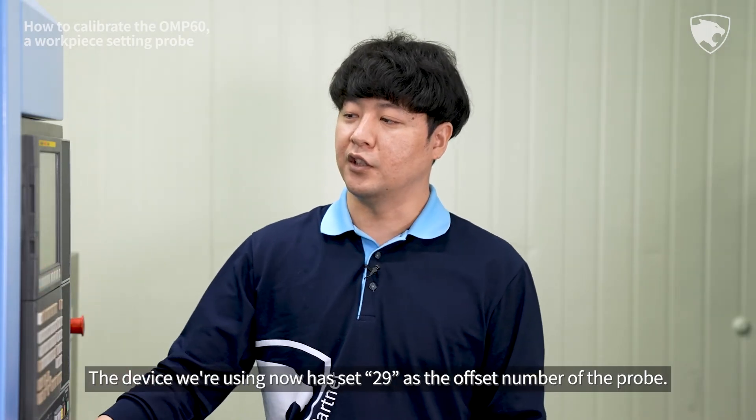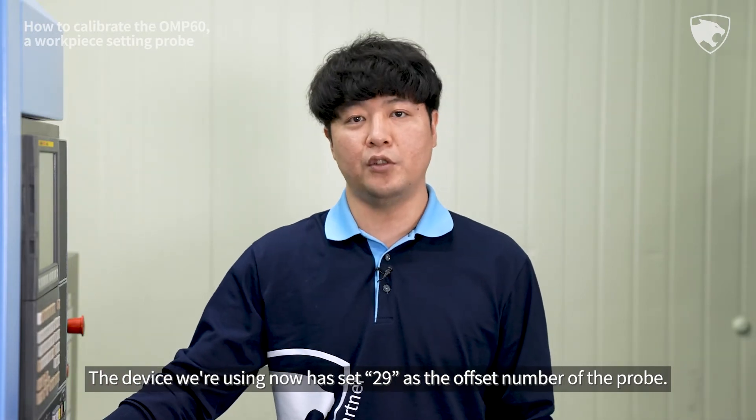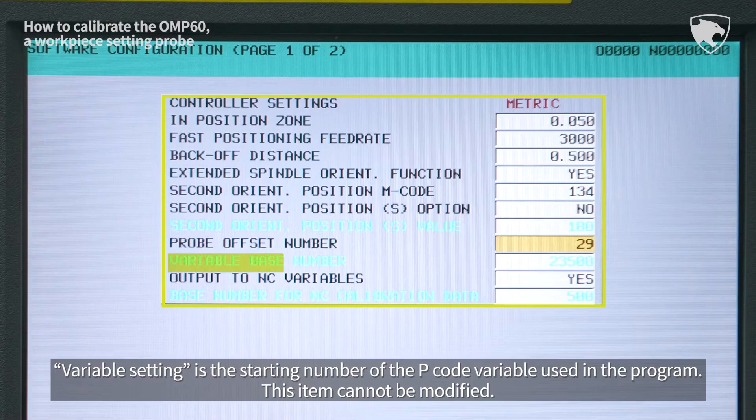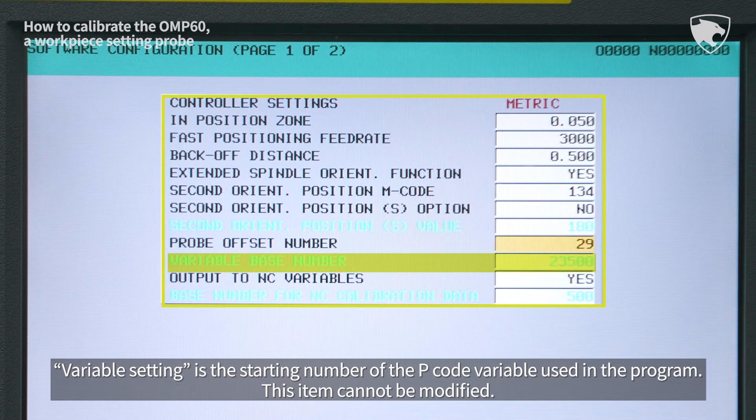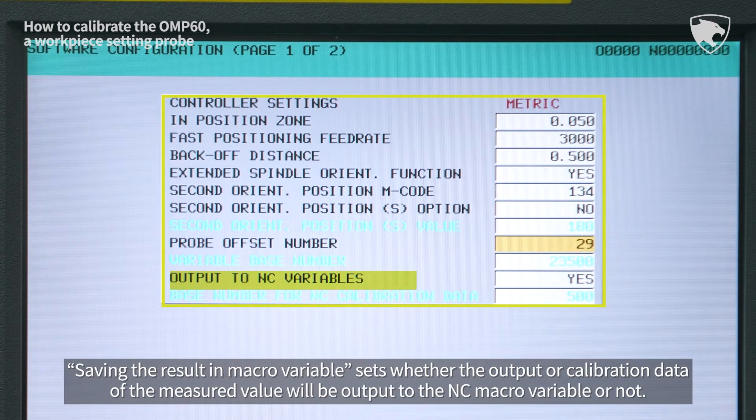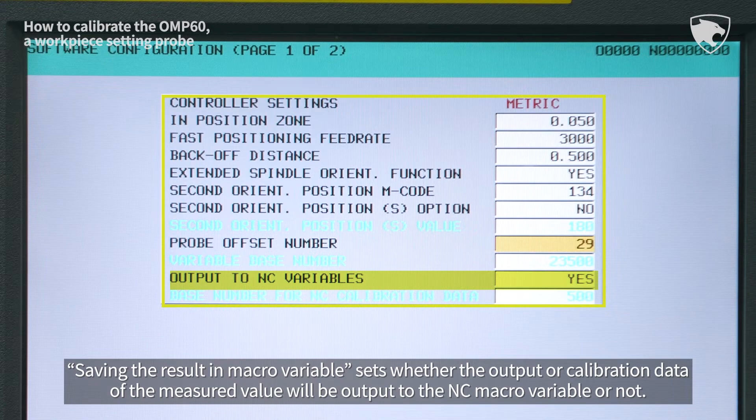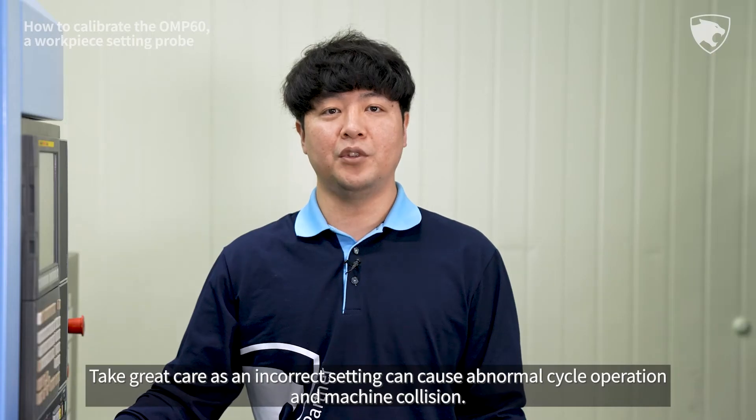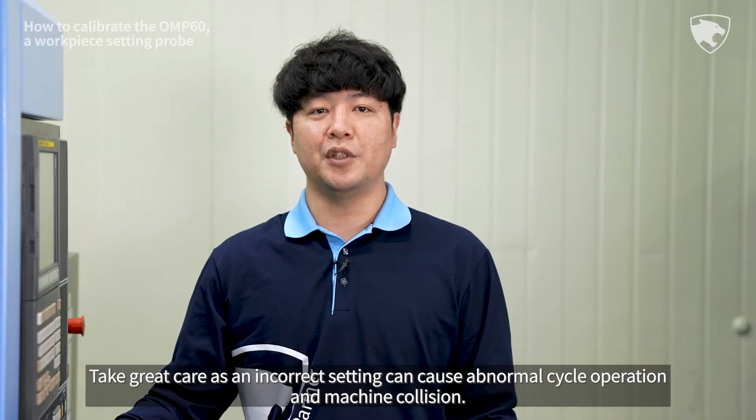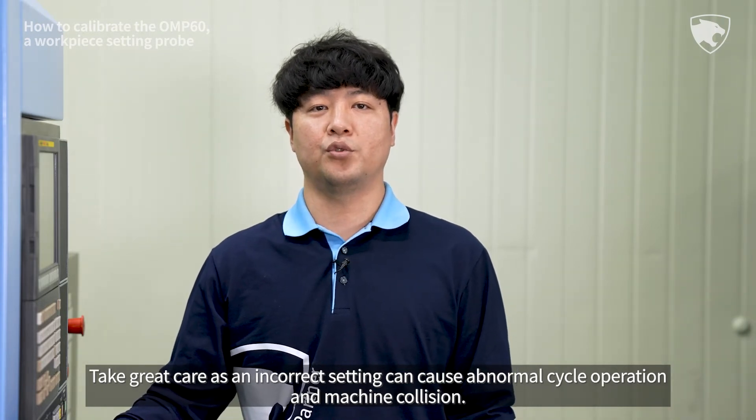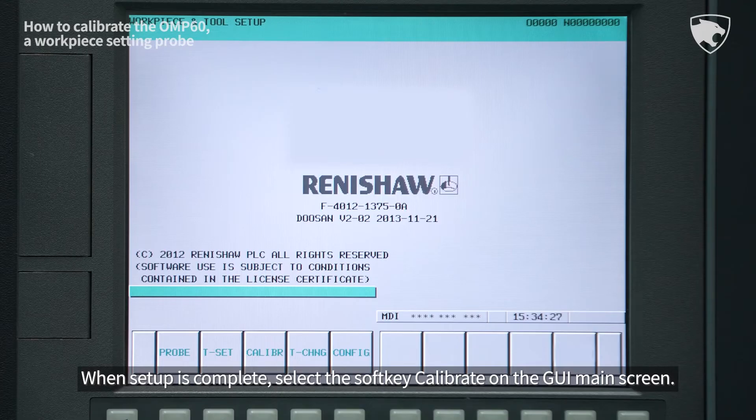The device we're using now has set 29 as the offset number of the probe. Variable setting is the starting number of the P-code variable used in the program. This item cannot be modified. Saving the result in macro variable sets whether the output or calibration data of the measured value will be output to the NC macro variable or not. Take great care as an incorrect setting can cause abnormal cycle operation and machine collision.